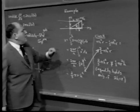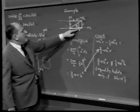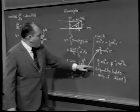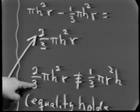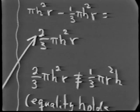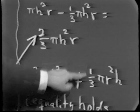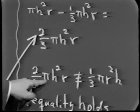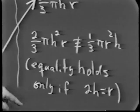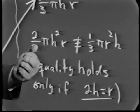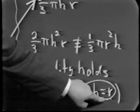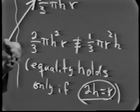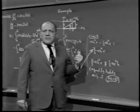Notice that the same region R generates a different volume when rotated about the y-axis versus the x-axis. Rotating about the y-axis gave two-thirds pi H squared R, while rotating about the x-axis gave one-third pi R squared H. These two expressions are not identical — equality holds only in the specialized case that 2H equals R. The same area generates different volumes depending on the axis of rotation.